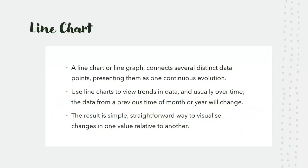A line chart or graph connects several distinct data points representing them as one continuous evolution. Using line charts to view trends in data, usually over time - the data from previous time, month, or year will change. The result is a simple, straightforward way to visualize changes in one value to another. Basically, line charts show you the period of a single time spanning like months or maybe years that this particular category is changing, like sales or business profits or losses.